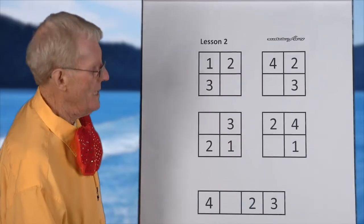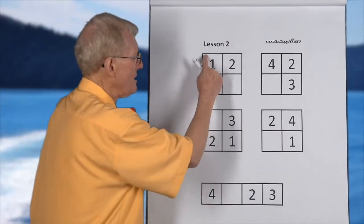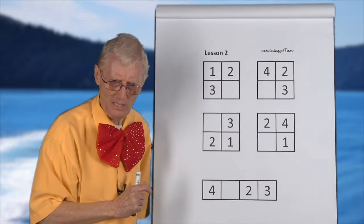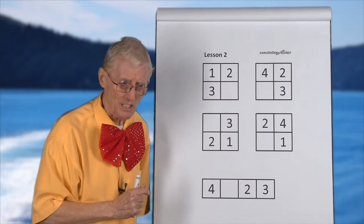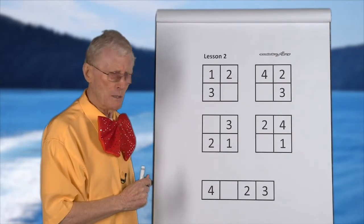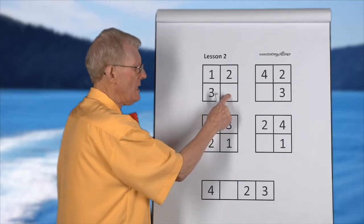Wow. These are squares. We call these squares. But there's another name we give them. And it's called a cell. Can you say cell? Cell. Yeah. Well, what's missing here? Four. Four. You're quick, aren't you?